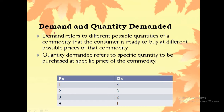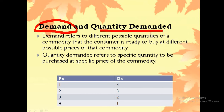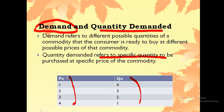When I am talking about the demand word, it would be a schedule. But when I am talking about quantity demanded, it means a specific quantity at a specific price. Demand refers to different possible quantities of a commodity that the consumer is ready to buy at different possible prices — it shows you a whole table where you have different prices and different quantities. But quantity demanded refers to a specific quantity to be purchased at a specific price.